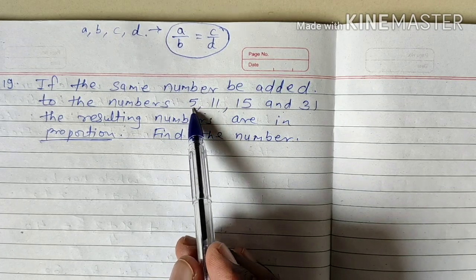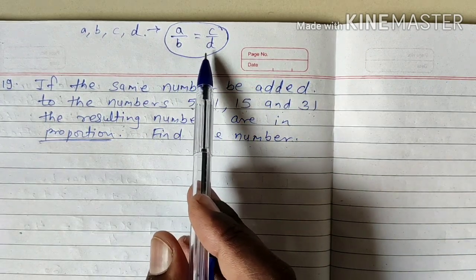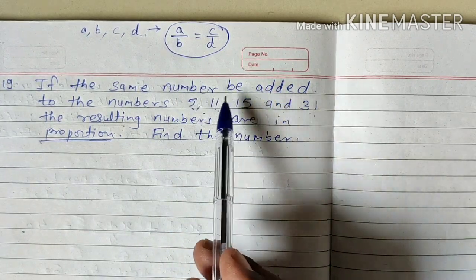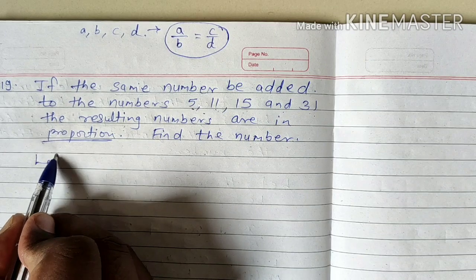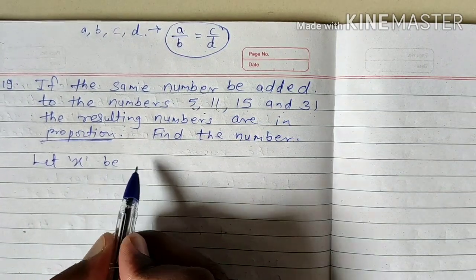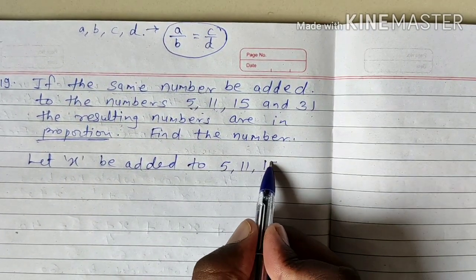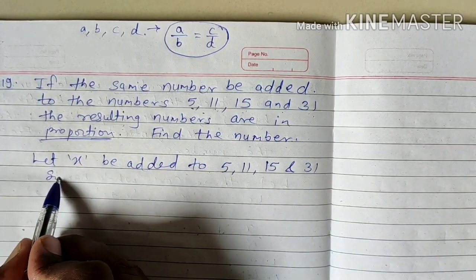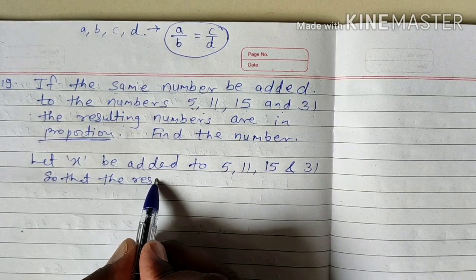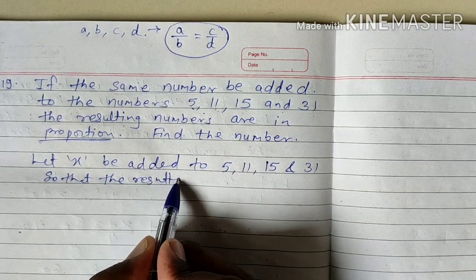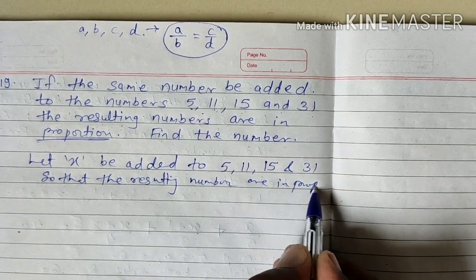So actually the numbers are 5, 11, 15, and 31. They become in the form A upon B equals C upon D only if a same number is added. Let X be added to 5, 11, 15, and 31 so that the resulting numbers are in proportion.